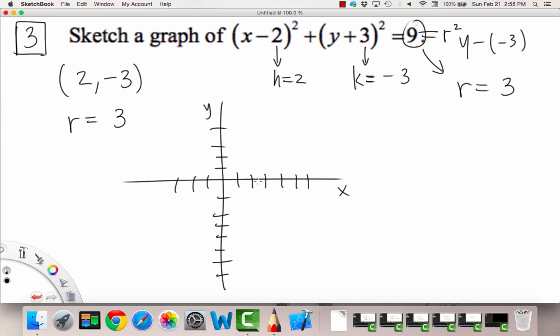Okay, so our center is at two comma negative three. So we're gonna place it right there. And then what we're gonna do is, because we have a radius of three, that means that the points on our circle are always a distance of three away from the center. So I always like to go up however many our radius is, so up by three in this case, and down by that many.